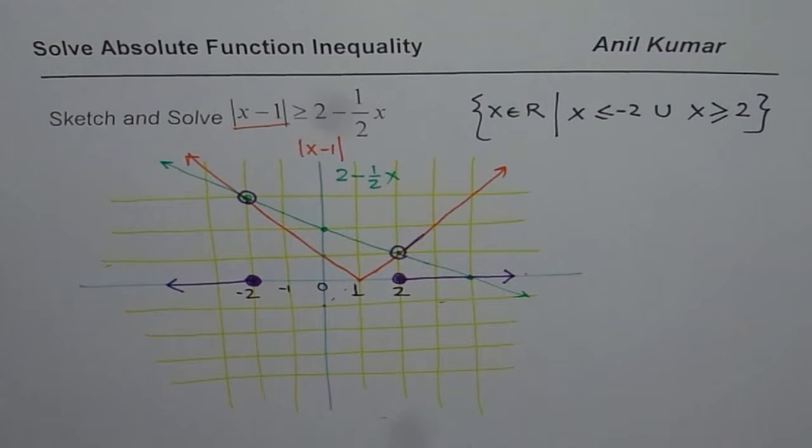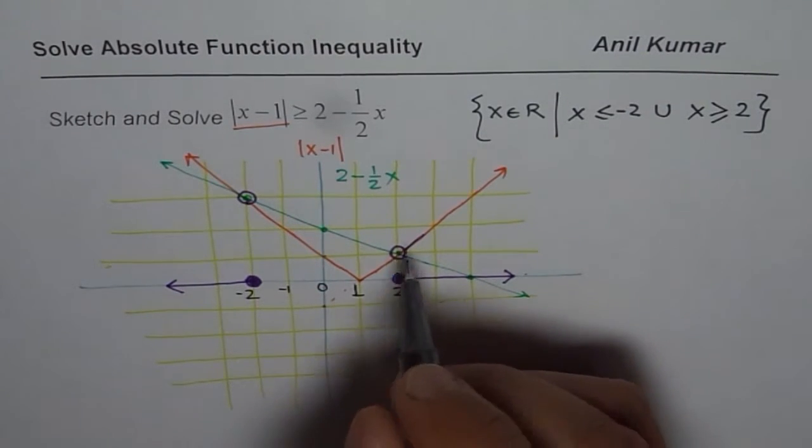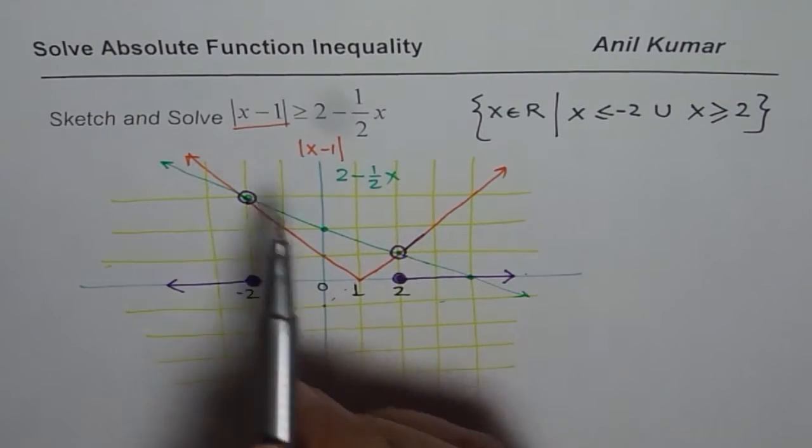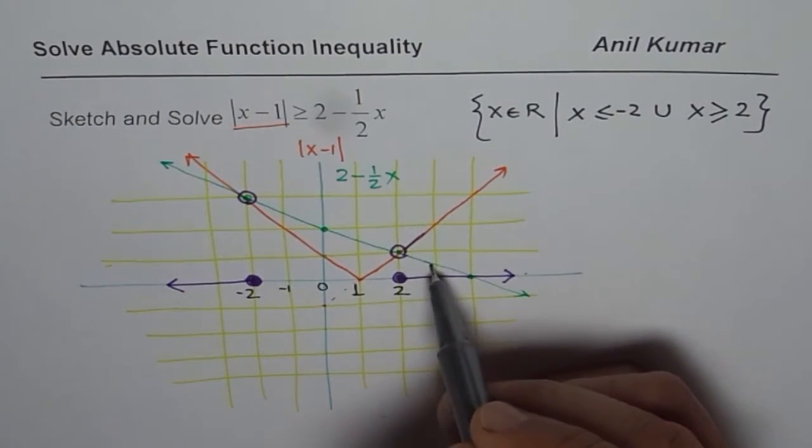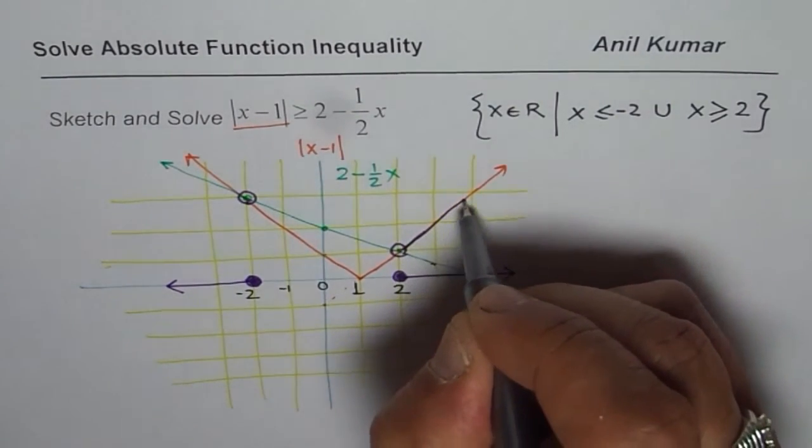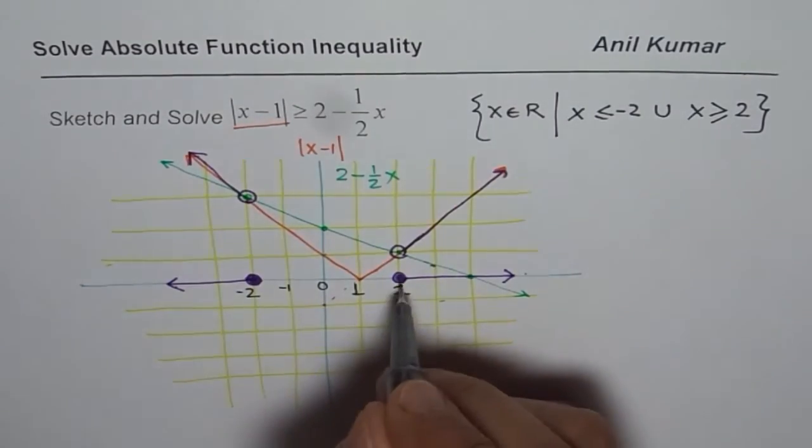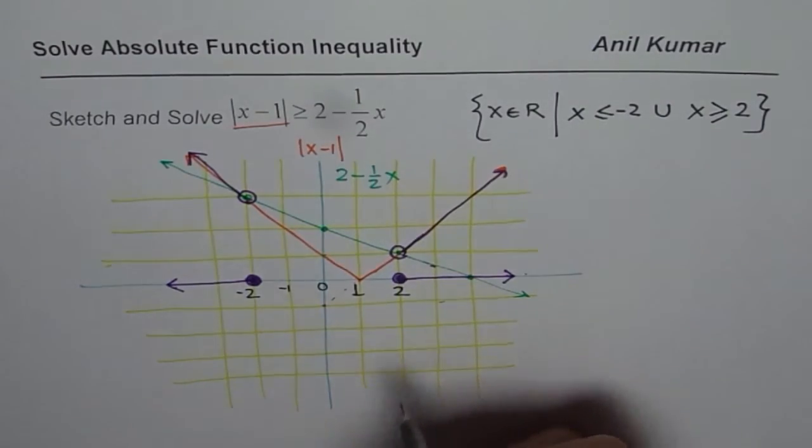So that is how you can get solution of absolute function inequality using graph. In this particular exercise I was trying to show how to sketch absolute function, how to sketch a line very easily, and find its solution from the graph. So we saw that we need to find the points of intersections. Once we have those points, then we have to decide where absolute function is greater. The orange line is higher than green line, so the corresponding x values become part of our solution. I hope that is absolutely clear.